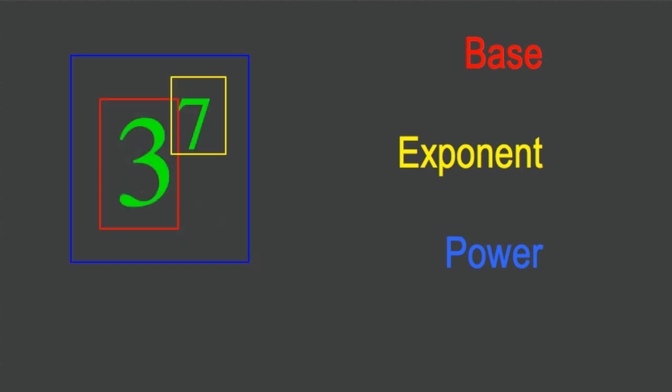So just to highlight that again: the number that is repeatedly multiplied is the base, and that's that right there. The number of times that you are repeatedly multiplying is the exponent. And the two put together, or the result of that multiplication, is referred to as the power.